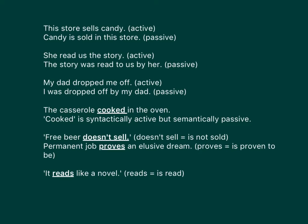The casserole cooked in the oven. The word 'cooked' is syntactically active but semantically passive. 'Free beer doesn't sell' — here, 'doesn't sell' means it's not sold. 'Permanent job proves an elusive dream' — here, 'proves' means 'is proven to be.' 'It reads like a novel' — here, 'reads' means 'is read.'